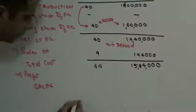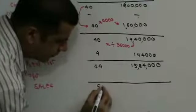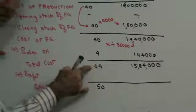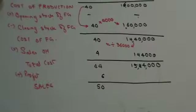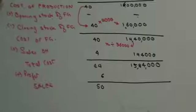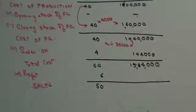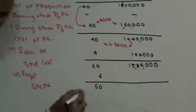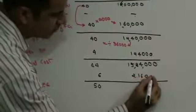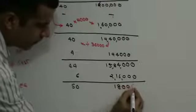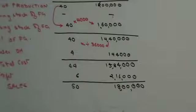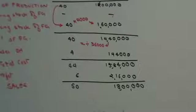Selling price per unit is 50 and cost price is 44, so profit is 6 rupees per unit. Multiply profit by units sold: 6 into 36,000 gives 2,16,000. Adding 15,84,000 plus 2,16,000 gives sales of 18 lakhs. That finishes the entire sum — simple, straightforward.